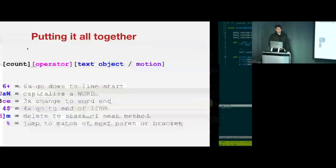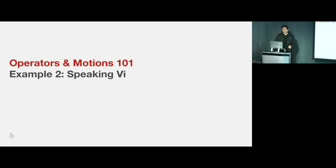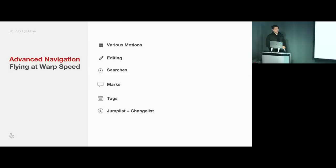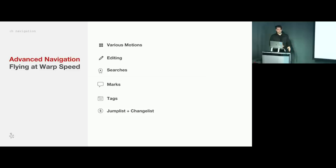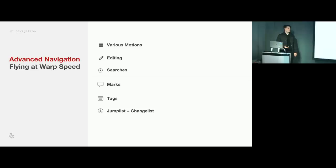Now I want to talk about advanced navigation — flying at warp speed. Vim has a ton of tools, so I've compressed this into six core topics: various motions, editing, searches, marks, tags, and the jump list or change list. Always be scrolling — you don't need HJKL to navigate everywhere. That's a bad habit. In terms of navigating the screen, H, M, and L stand for high, middle, and low of the screen. There's also ZT, ZZ, ZB, which moves the screen so your cursor is at the high, middle, or low.